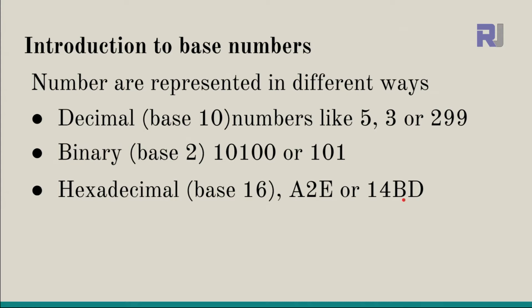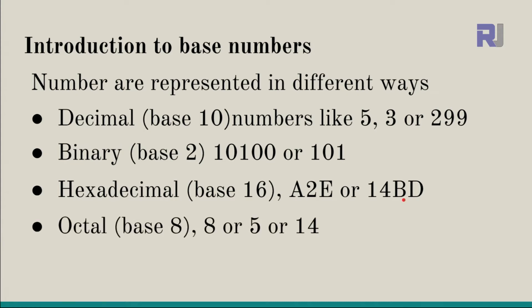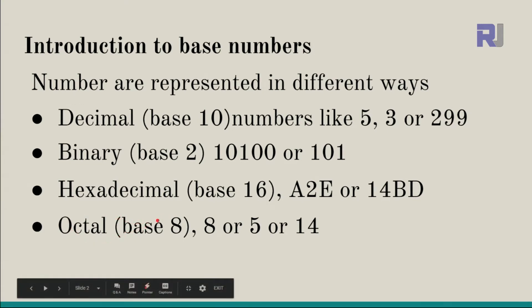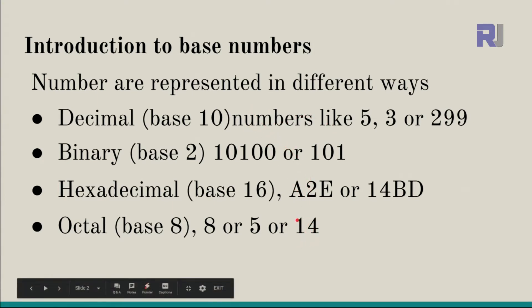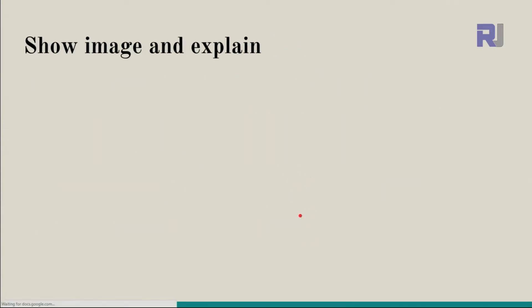Then we have octal. Octal means 8, and that's base 8. The numbers start from 0 to 7, and after 7 it increments back. For example, 85 in base 8, and 14 in octal — this 14 is not equivalent to our decimal 14, which I'm going to show you how to calculate.